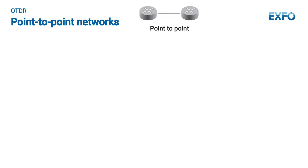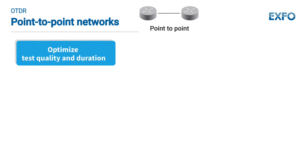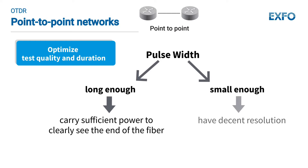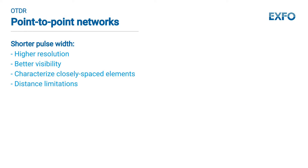For point-to-point networks, to optimize test quality and duration, the pulse width needs to be long enough to carry sufficient power to clearly see the end of the fiber, yet small enough to have decent resolution. A shorter pulse width is used to get a higher resolution, better visibility inside the link and to characterize closely spaced elements, but it has distance limitations.